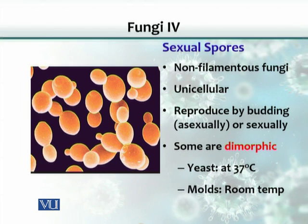Fungi in general prefer asexual reproduction or spore formation when nutrients are abundantly present. But when there is a scarcity of nutrients, sexual spore formation is preferred. This gives them some genetic diversity and a survival advantage.